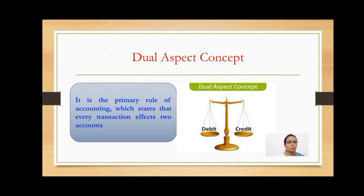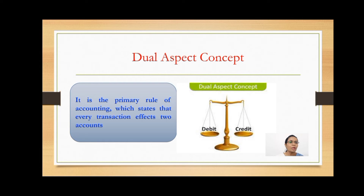The next is the Dual Aspect Concept. It is the primary rule of accounting which states that every transaction affects two accounts. According to this principle, every transaction has two aspects and both aspects are recorded in the books of account — one is debited and the other is credited with an equal amount. For example, Akshay starts a business with Rs. 5 lakh. On one hand the business gets cash, and on the other hand a liability arises — that is, the business has to pay Akshay a sum of Rs. 5 lakh. So for every debit there is a corresponding equal credit.